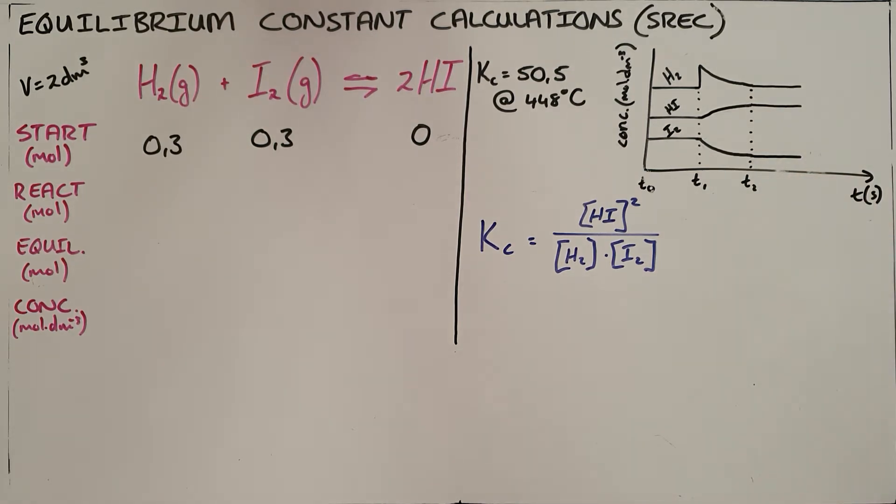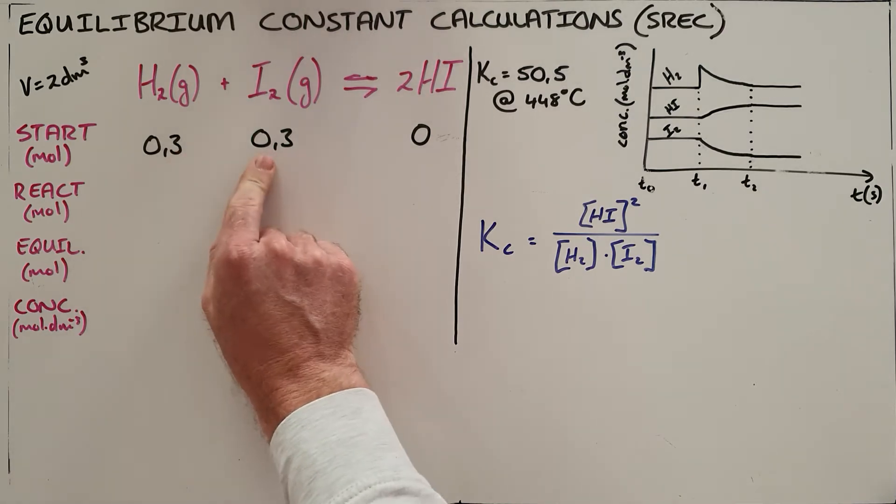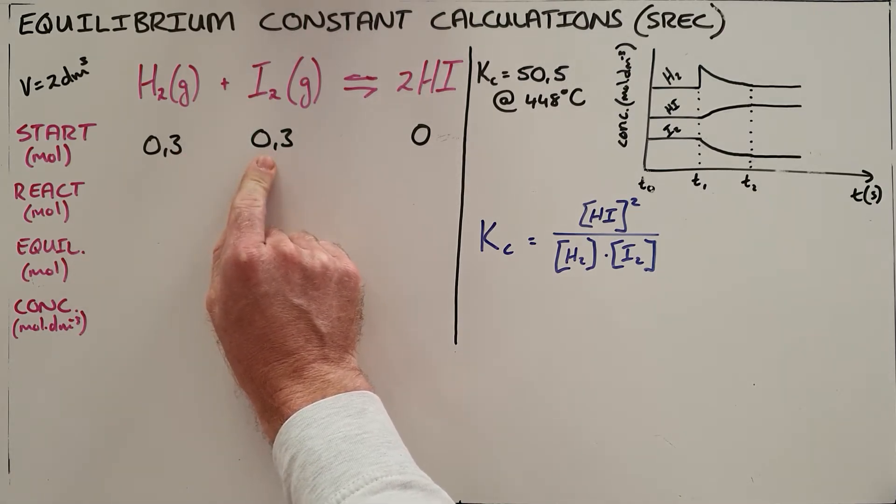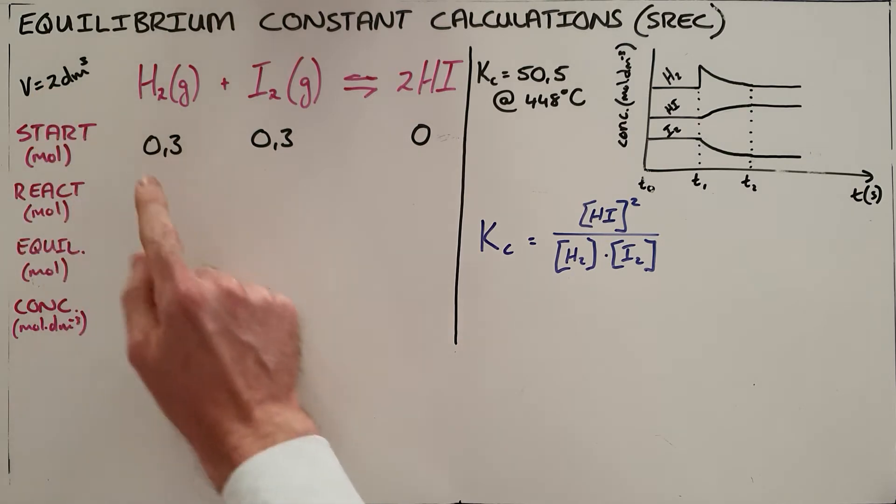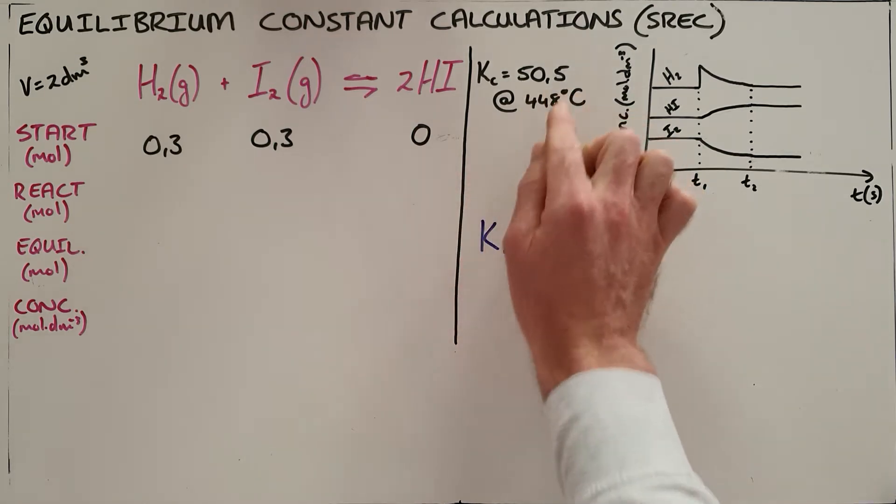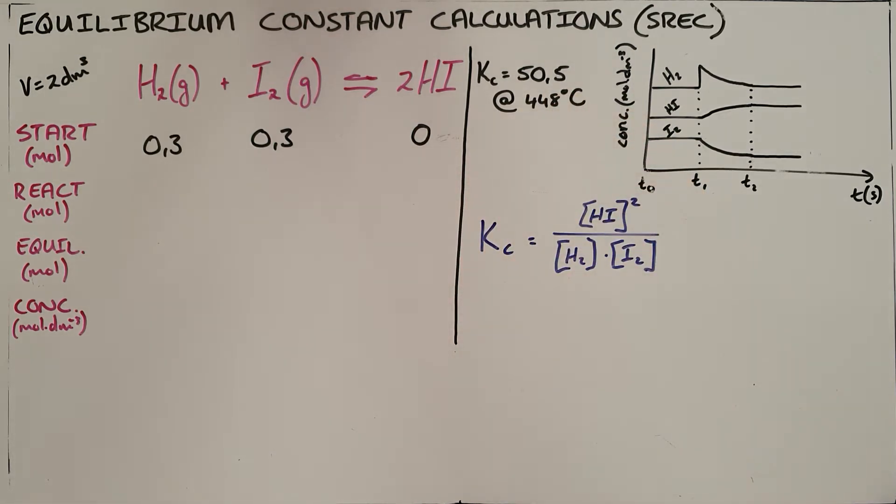The question states: initially, 0.3 moles of hydrogen and 0.3 moles of iodine are injected into the closed container with a volume of 2 cubic decimeters. Equilibrium is established at 448 degrees Celsius, and the equilibrium constant at this temperature is 50.5. Equilibrium constants are only constant for a specific temperature.